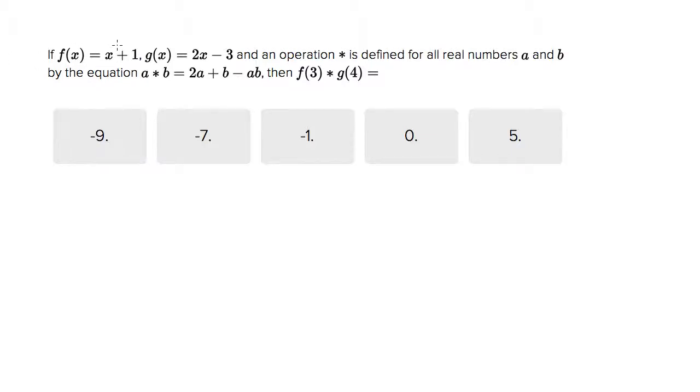So you've got the specialized function f of x, which is x plus 1, the special function g of x, which is 2x minus 3, and the special function star, which is equal to this thing. Right? So let's do these in steps.